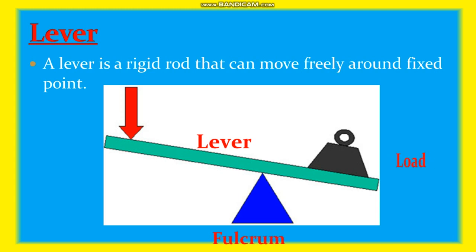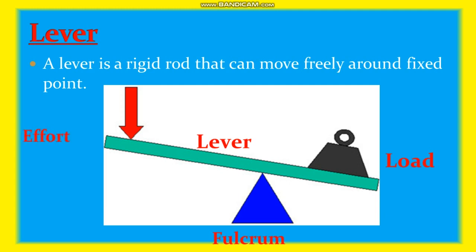Then there is the load — it is the object on which work is to be performed or that has to be moved. Then the effort — it is the force that has to be applied on the rod in order to perform a task. The effort can also be called force, and this is the main structure of how a lever looks.